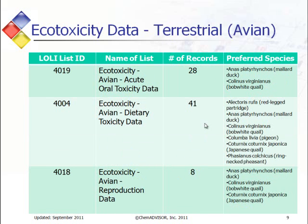This slide shows the table for avian, or bird data, and we do have three different lists associated with that: acute oral toxicity data, dietary toxicity data, and reproduction data. Again, the rightmost column depicts the species that are selected and thus preferred.